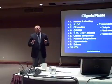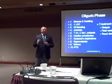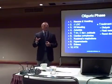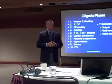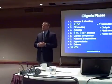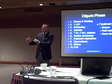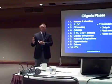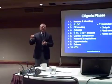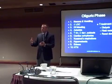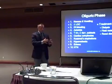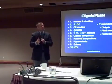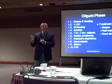In acute renal failure, remember that all this is happening suddenly, and it's happening secondarily to something else. Acute renal failure is a secondary disease. Nobody comes to the hospital with acute renal failure — they come with sepsis, or a myocardial infarction, and then develop acute renal failure. So acute renal failure is secondary to something else, and because of that, it has a high mortality.